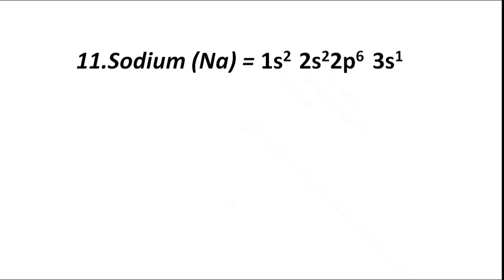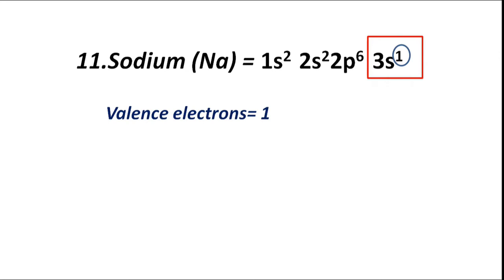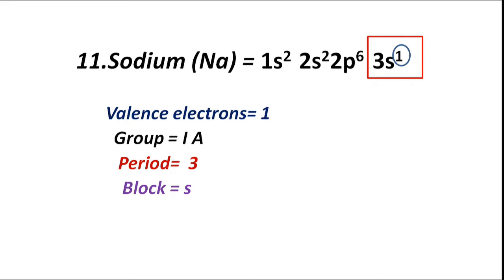Atomic number 11, sodium (Na), has electronic configuration 1s2 2s2 2p6 3s1. The valence shell is M. Valence electrons are 1 — only 1 electron is present in 3s1. Hence group IA, period 3. For M shell, highest coefficient is 3, so n equals 3 and period is third. Valence electrons fill the s sub-shell, hence block S. Valency is 1.